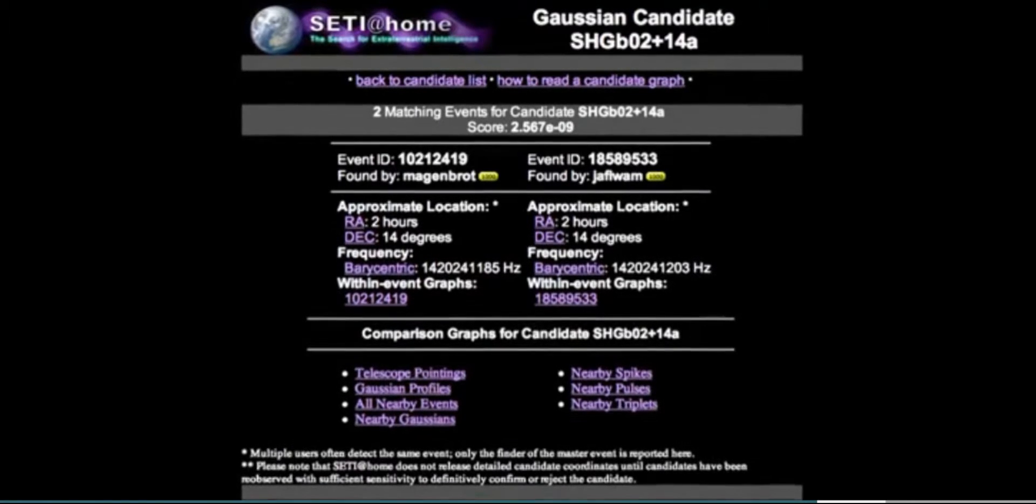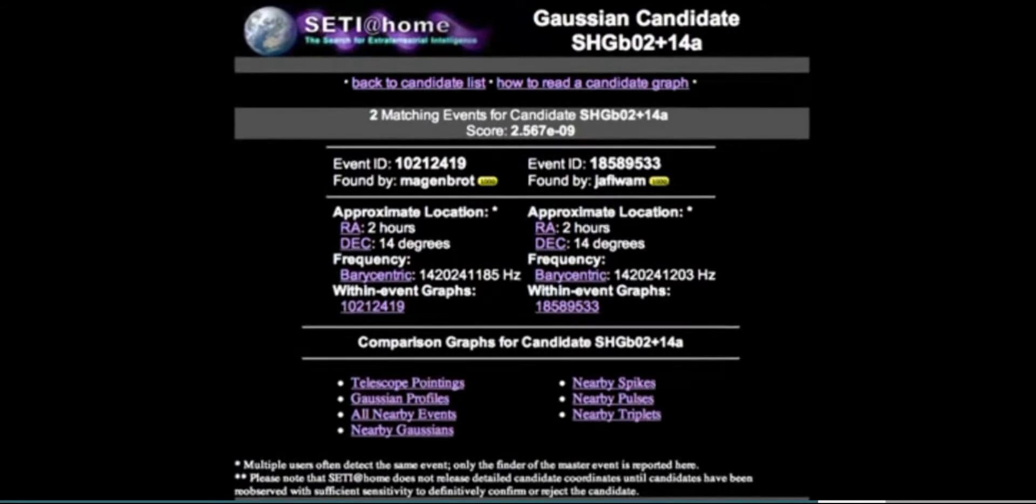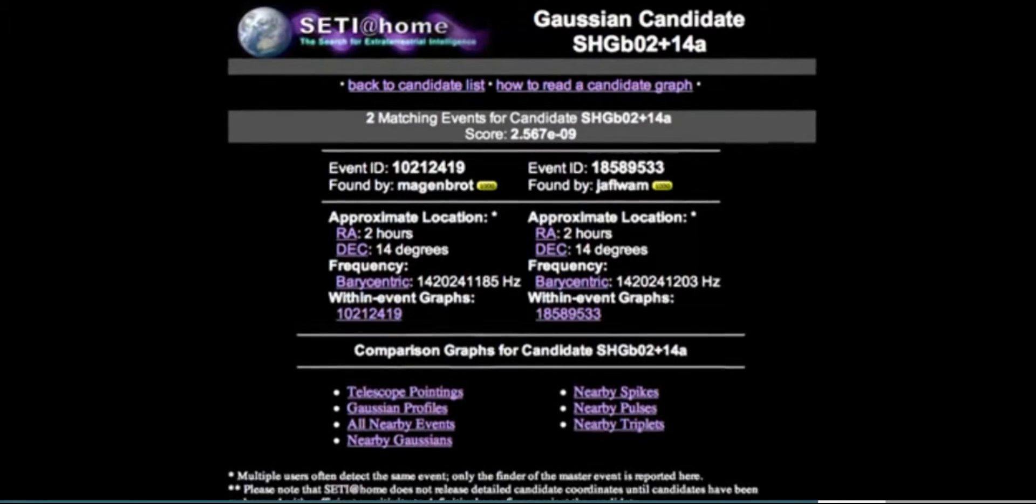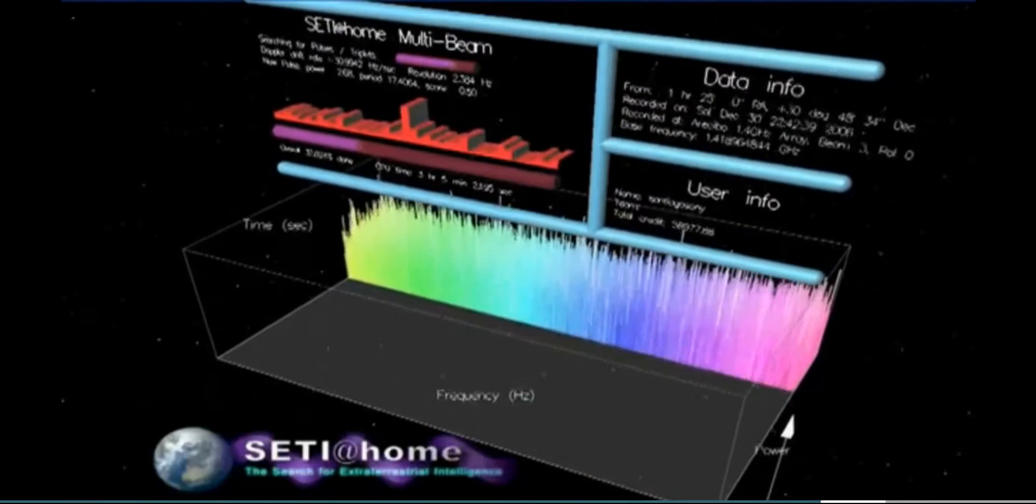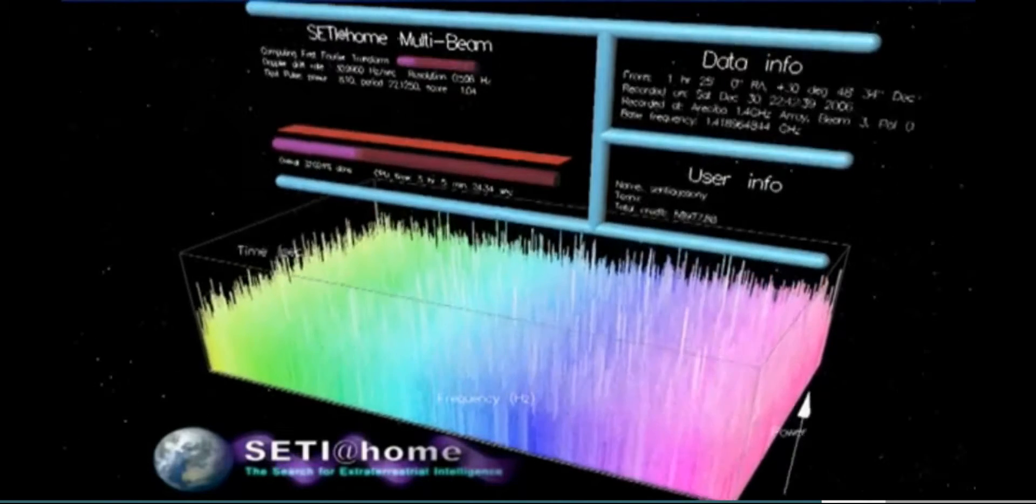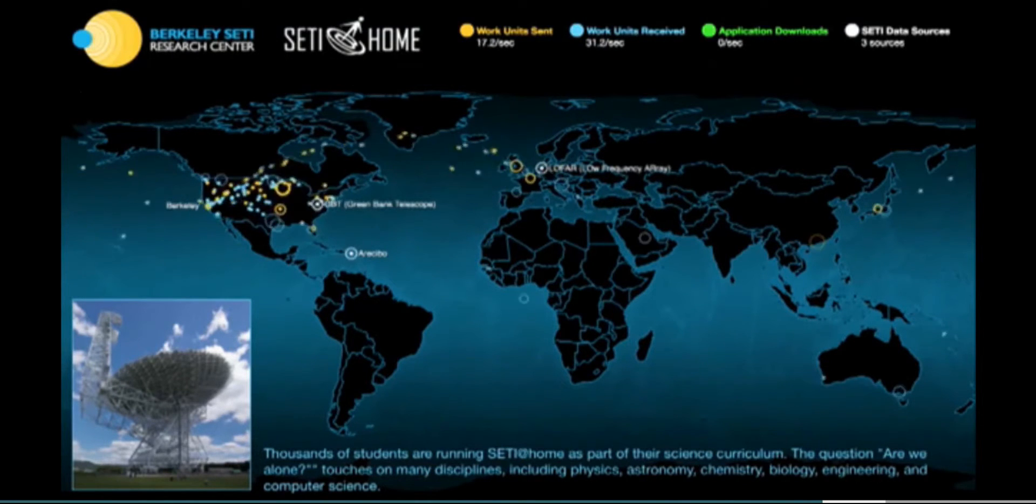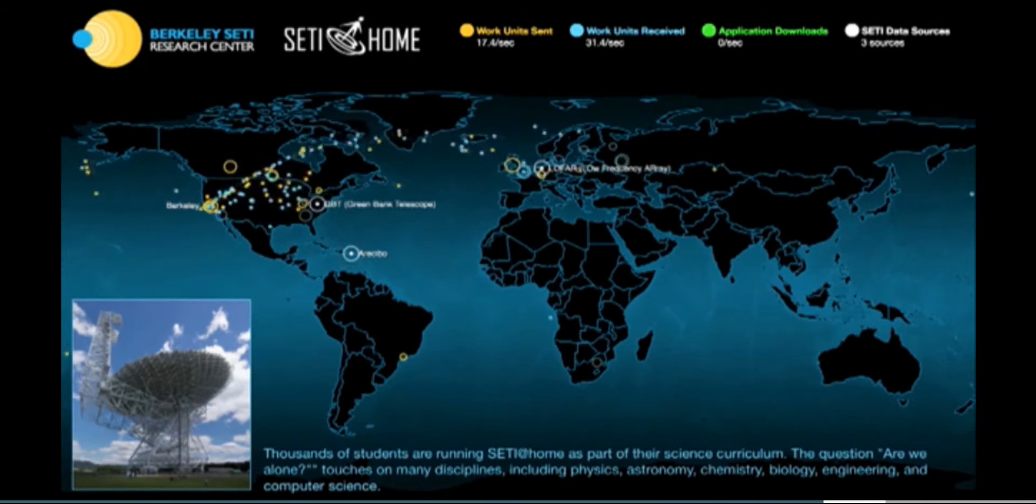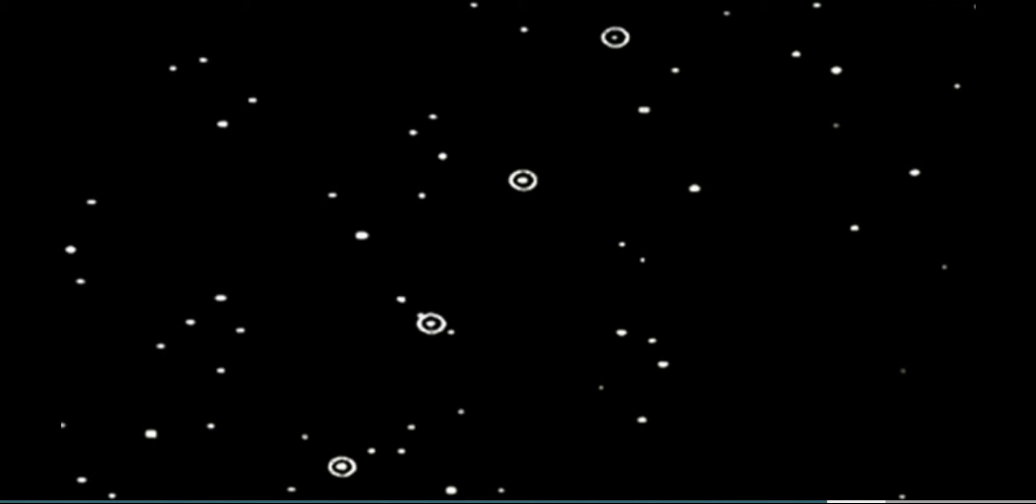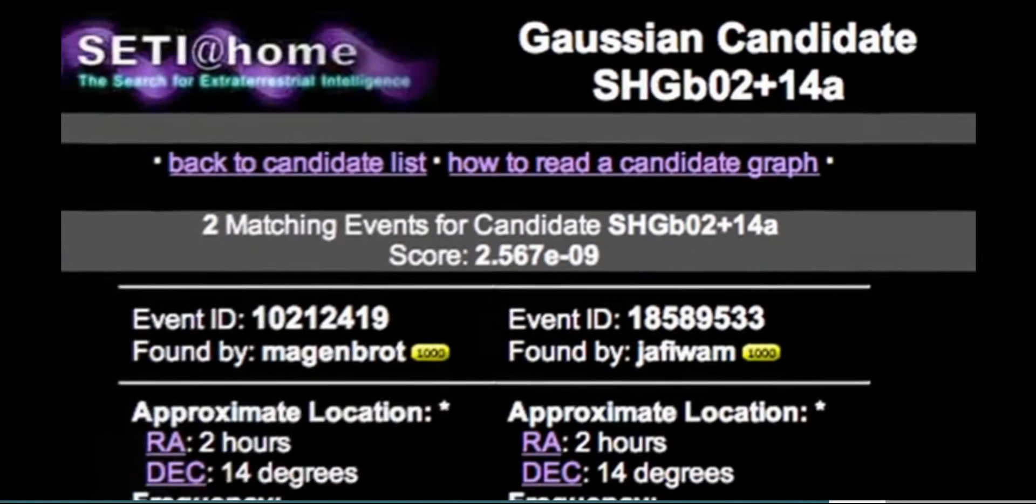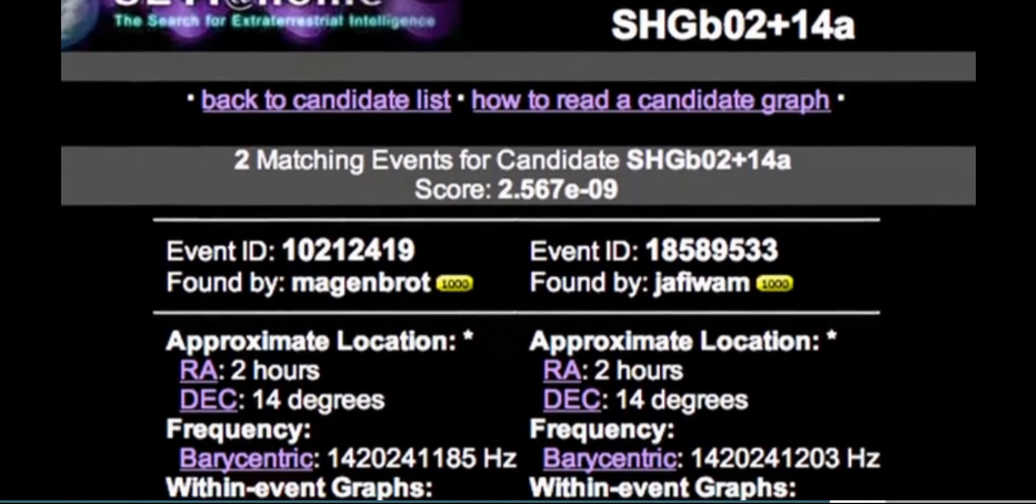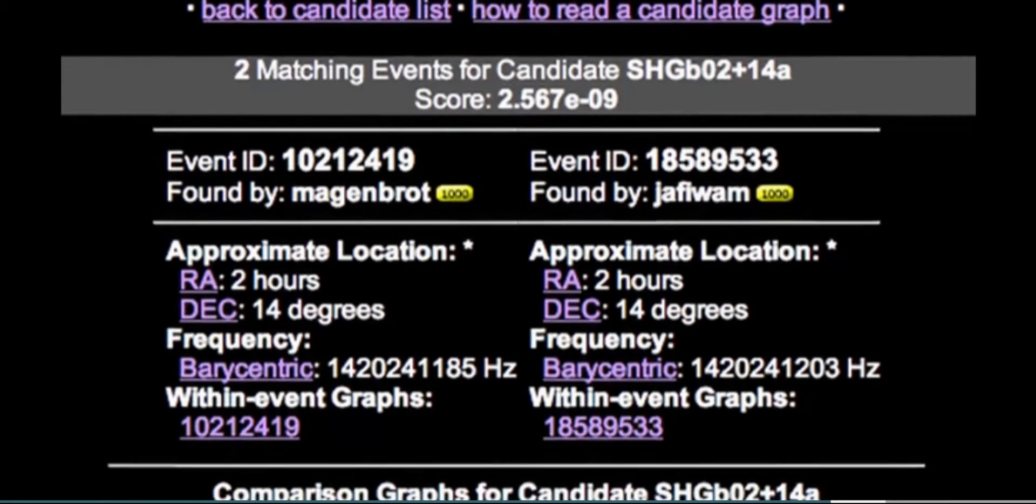Another signal which provoked important debates was the radio source SHGB-02-14A, discovered in March 2003 by SETI at Home, and announced in New Scientist on September 1, 2004. Since SETI at Home started, more than five billion signals have been detected, that because of their mathematical profile or their lack of repetition in time, have been ruled out. Among all of them, the candidate SHGB-02-14A was one of the very few that was confirmed again, and the only one to maintain a high statistical chance of being intelligent and of extraterrestrial origin.